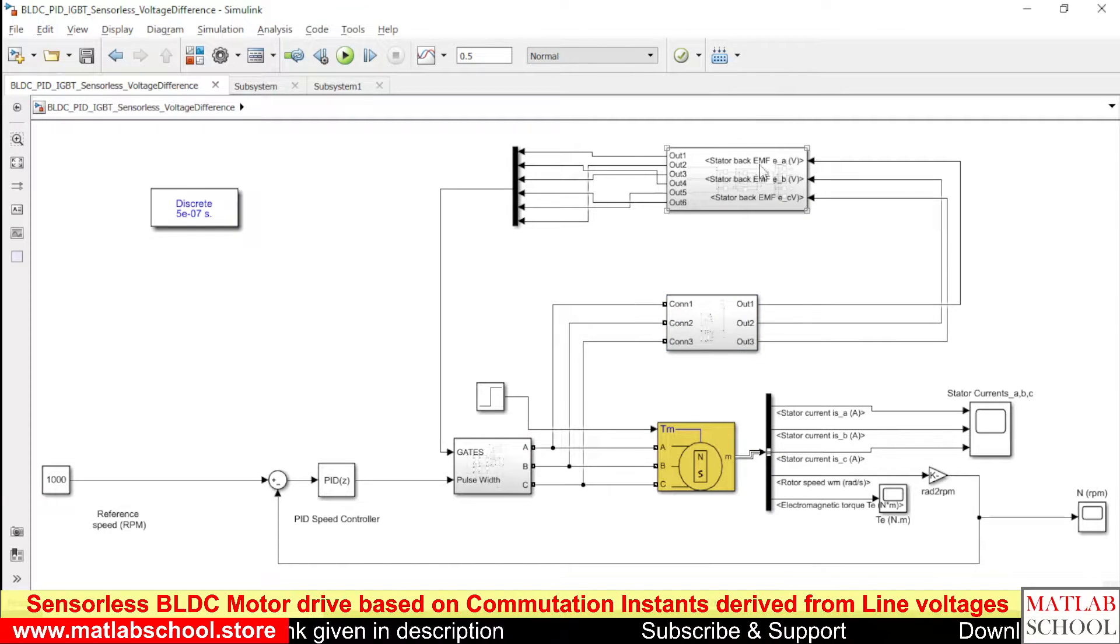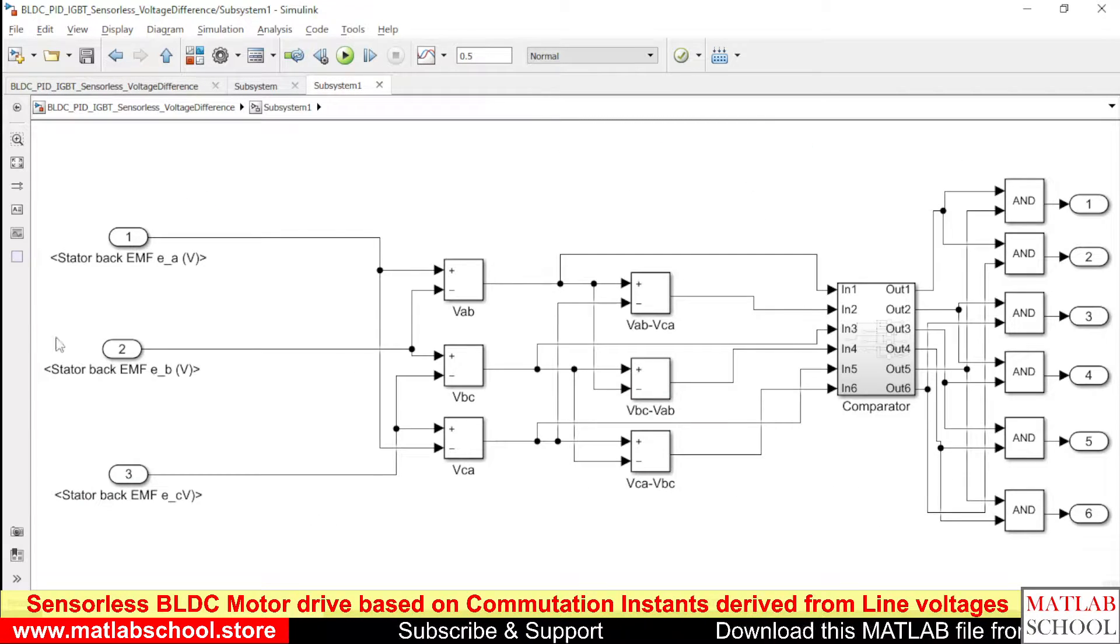And the output of this block is given as input to the second block. And the inputs are the back EMFs of the phases A, B and C. The line voltages, difference of line voltages are found here. And again, we are finding all the difference of line voltages. And here we have the comparator block. And this is the place where comparison happens between the voltages. And finally, we have the gates.